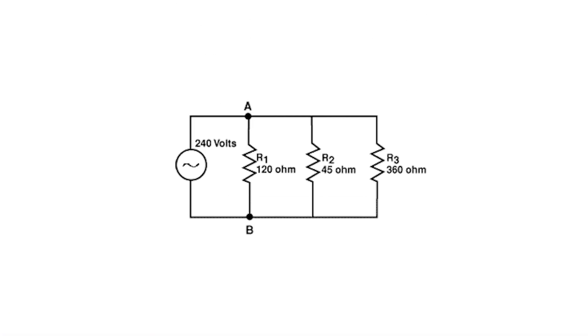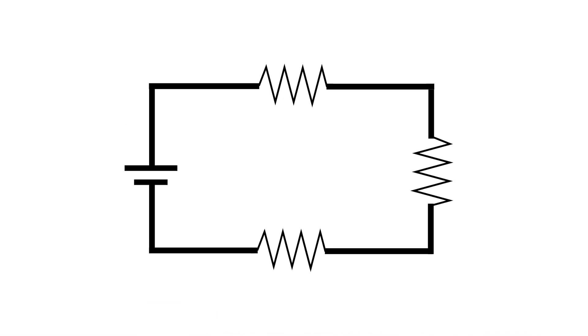When you run more than one load in parallel with each other — meaning you're not going in and out of one to the other like you do in a series circuit, but you're connecting each side to the power supply — it affects the resistance of that circuit differently. So let's talk about how that works.